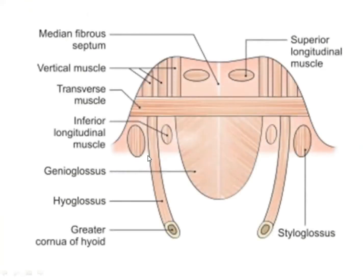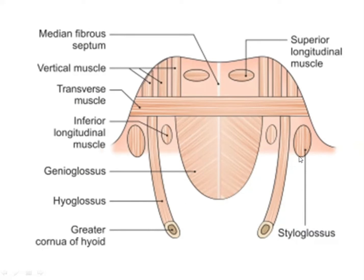Here you can see the muscle arrangement. This is the superior longitudinal muscle, this is the vertical muscle, this one is the transverse muscle, and this is the inferior longitudinal muscle. Then the extrinsic muscles: genioglossus, hyoglossus, and styloglossus.